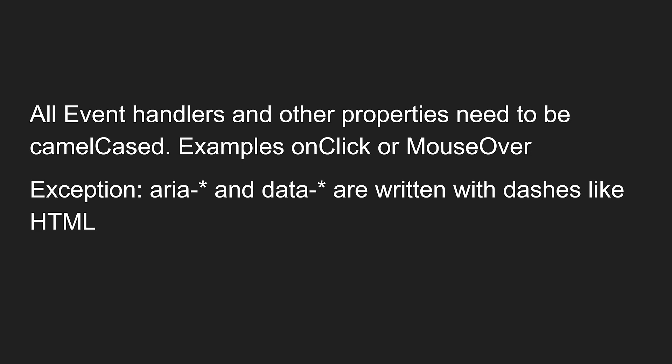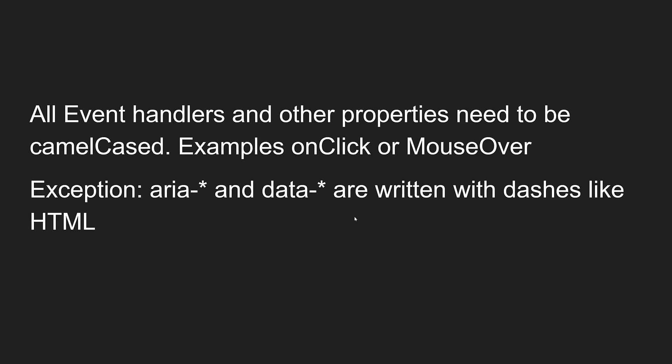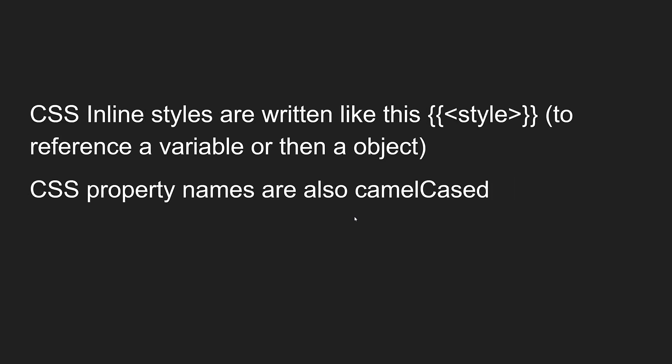There are some exceptions: `aria-` and `data-` attributes are written with dashes, just like in HTML. For CSS inline styles, the `style` attribute takes an object — you can reference all styles as an object assigned to a variable. CSS property names are also camelCased, so `text-transform`, `font-size`, and `font-weight` all become camelCase equivalents.